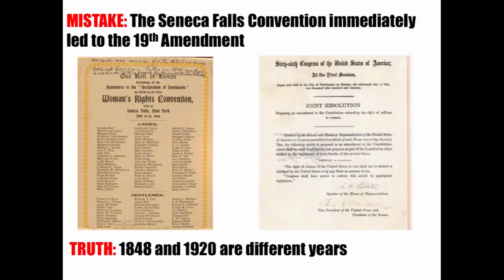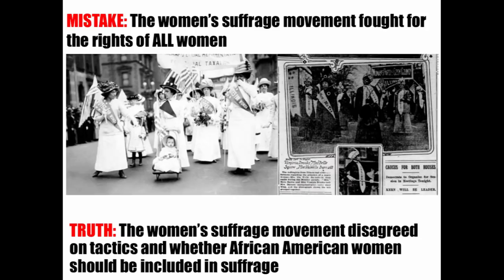Students say the Seneca Falls Convention immediately led to the 19th Amendment — 1848 and 1920 are different years. At Seneca Falls, a group of women and a few men demanded suffrage and other rights, and this is often seen as the start of the women's suffrage movement. But a lot happened between 1848 and 1920, including setbacks. Women got passed over for the vote when the 15th Amendment was adopted. Women played a big role in progressive reforms, the impacts of World War I, and more — so don't skip over those historical developments.